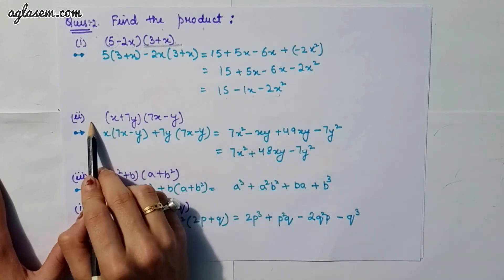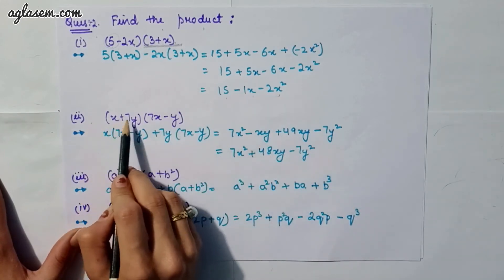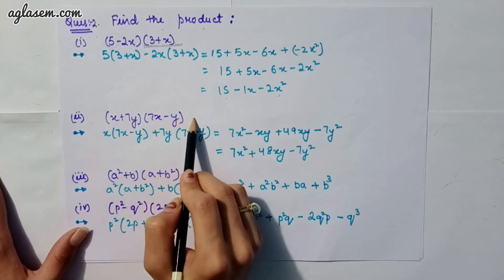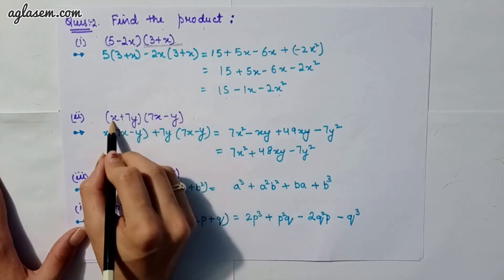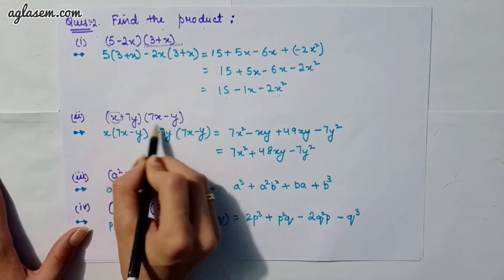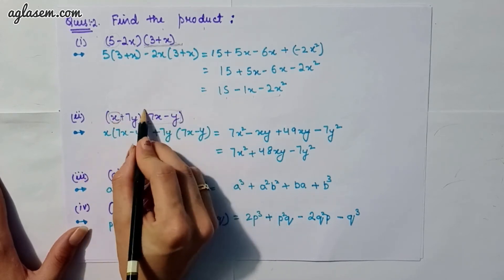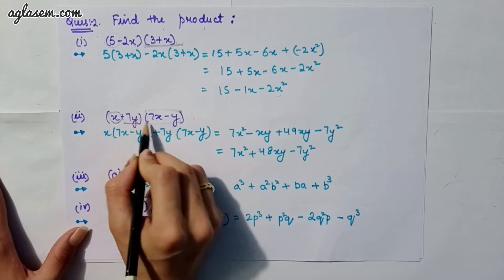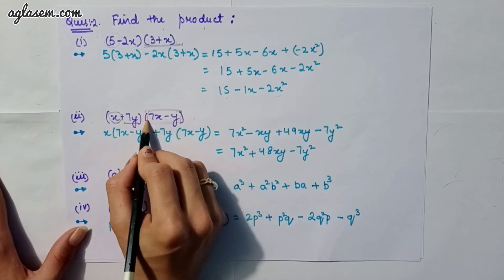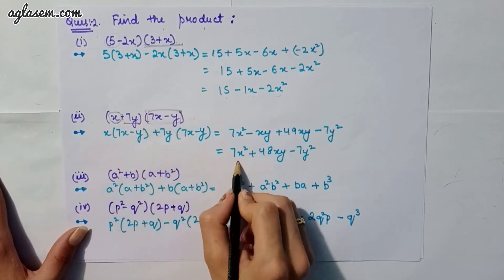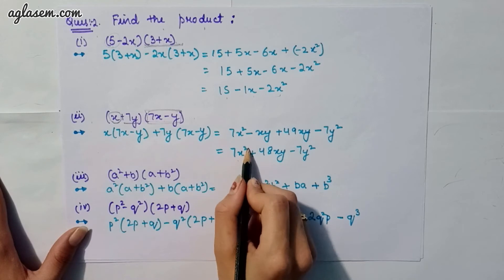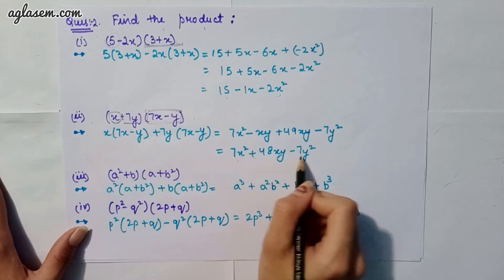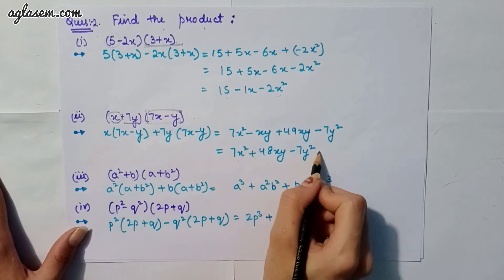The second part says (x + 7y) and (7x − y). Again the same formula — x will be multiplied by this whole bracket and 7y will be multiplied by this whole bracket. So our answer will be 7x² + 48xy − 7y².